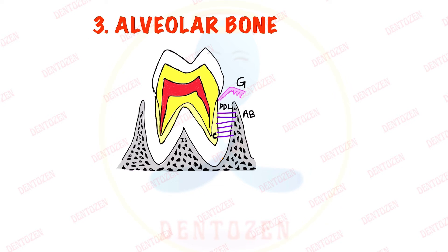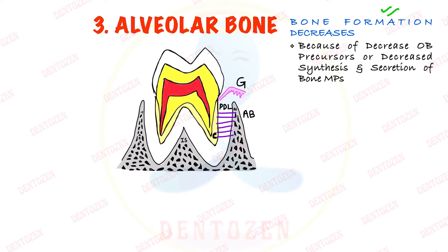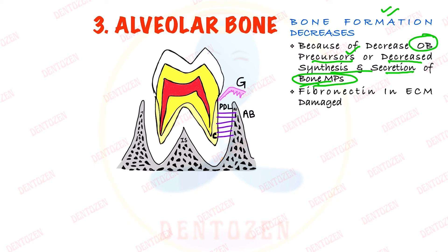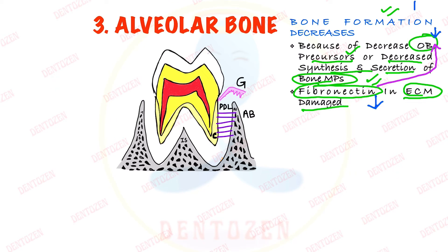Now let's talk about alveolar bone, which is a hard tissue. Bone formation decreases with age because the precursors of osteoblast cells decrease, leading to decreased synthesis and secretion of bone matrix proteins. Also, fibronectin — a component present in the extracellular matrix with a role in osteoblastic cell activity — gets damaged with age, so osteoblastic activity also decreases, resulting in decreased bone formation.